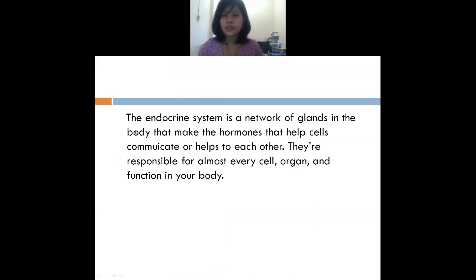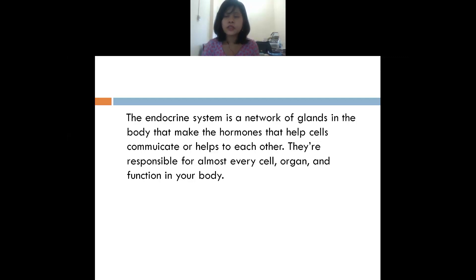What do we mean by the endocrine system? The endocrine system means they are a network of glands. We have seen in the previous slide many glands: hypothalamus, parathyroid, thyroid. All these glands form a network — they all communicate and unite with each other. And what do they do? They make hormones. These endocrine glands make hormones, and these hormones help the cells in your body.